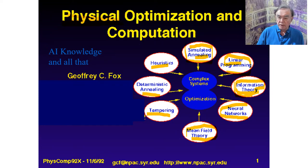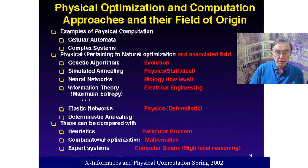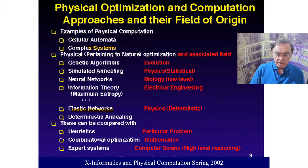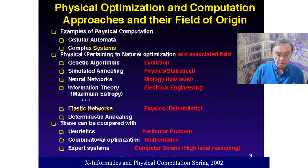Heuristics are any approach that uses an analogy to get an approximate optimization method. Genetic algorithms are related to evolution, simulated annealing to physics, neural nets to biology, information theory to electrical engineering. Elastic networks — a physics approach — are a rather specialized technique for the traveling salesman problem, no longer commonly used. Deterministic annealing is also physics. Combinatorial optimization is mathematics. Expert systems are computer science or high-level reasoning — using knowledge networks to make deductions, like IBM Watson does.